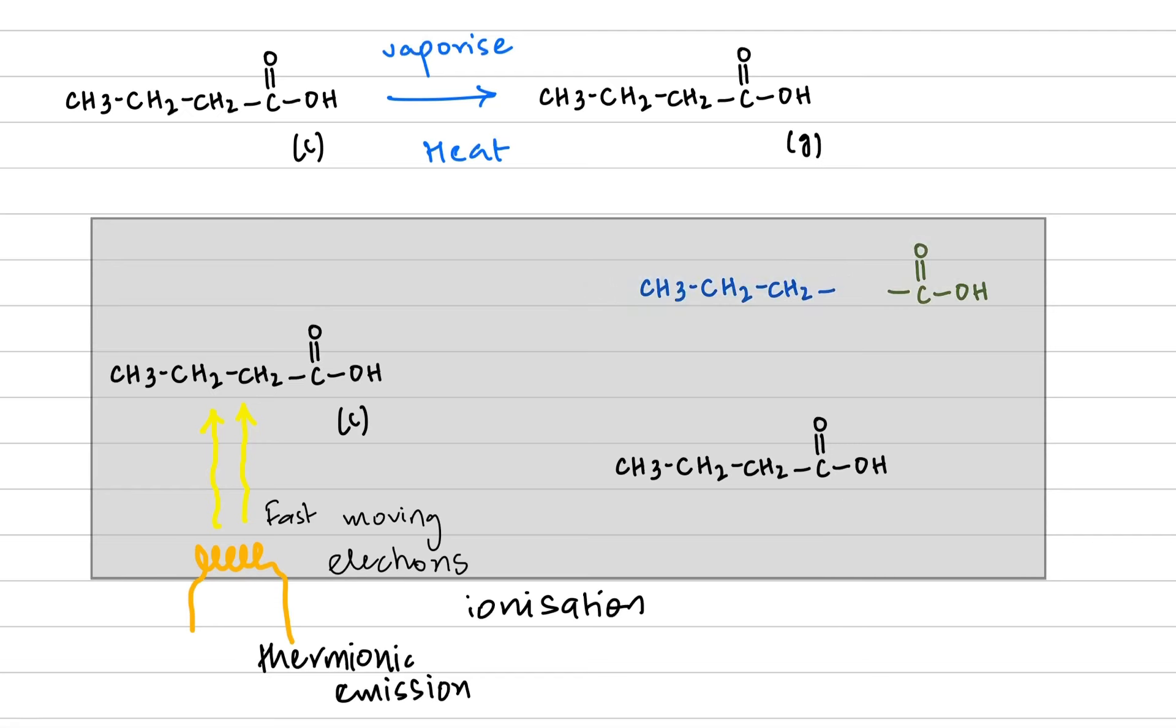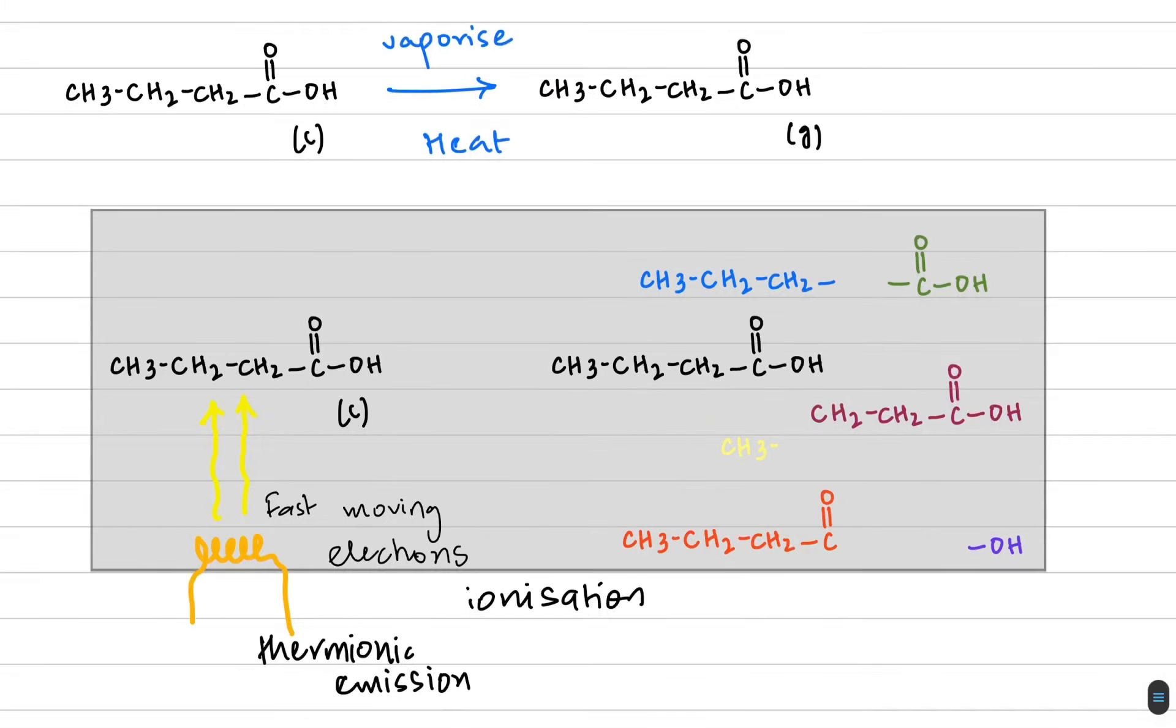These fast moving electrons will hit my compound breaking the bonds and will release various fragments. You can receive different fragments or the molecule may not even break itself, so that would be the biggest fragment known as the molecular fragment. All these are molecular fragments in the sense that the molecule has been broken down from various points.